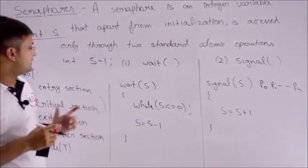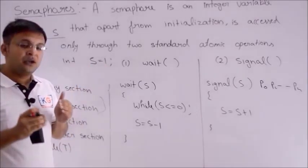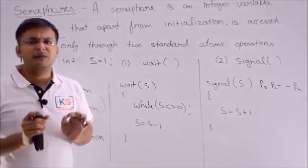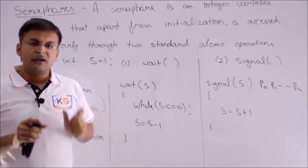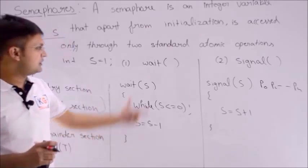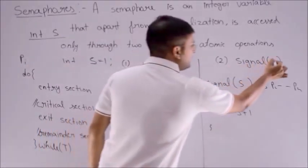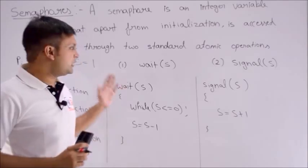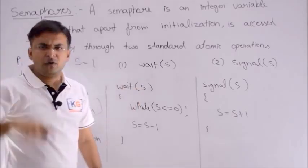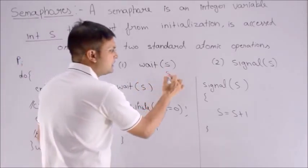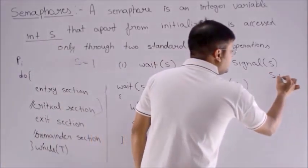Coming back to the logic: when we solve the critical section, we initialize S with 1. The major important thing to keep in mind is that after initialization, the semaphore can be accessed only by two atomic operations — one is called Wait and one is called Signal. So we have Wait(S) and Signal(S). Wait is a simple atomic operation which reduces the value of S by 1. Signal is also an atomic operation which increases the value of S by 1.